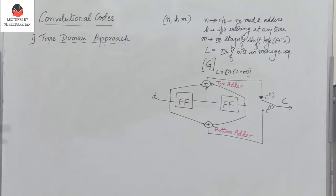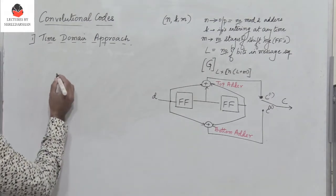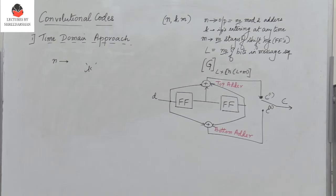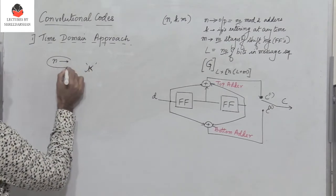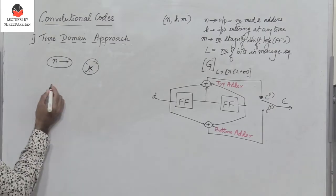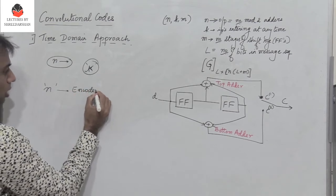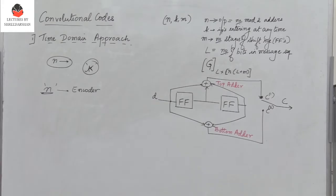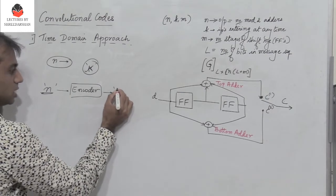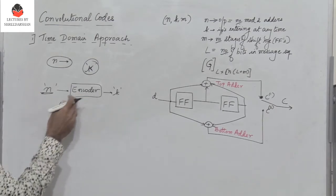What are convolutional codes and how are they different from block codes? In a block code, we have an n-bit code generated from a block of k input digits within a given time interval. Within that interval, the n code bits depend only on the k message bits. In a convolutional code, the block of n code digits produced by an encoder is not only dependent on the current k message bits, but is also dependent on the previous n minus k blocks of message bits.